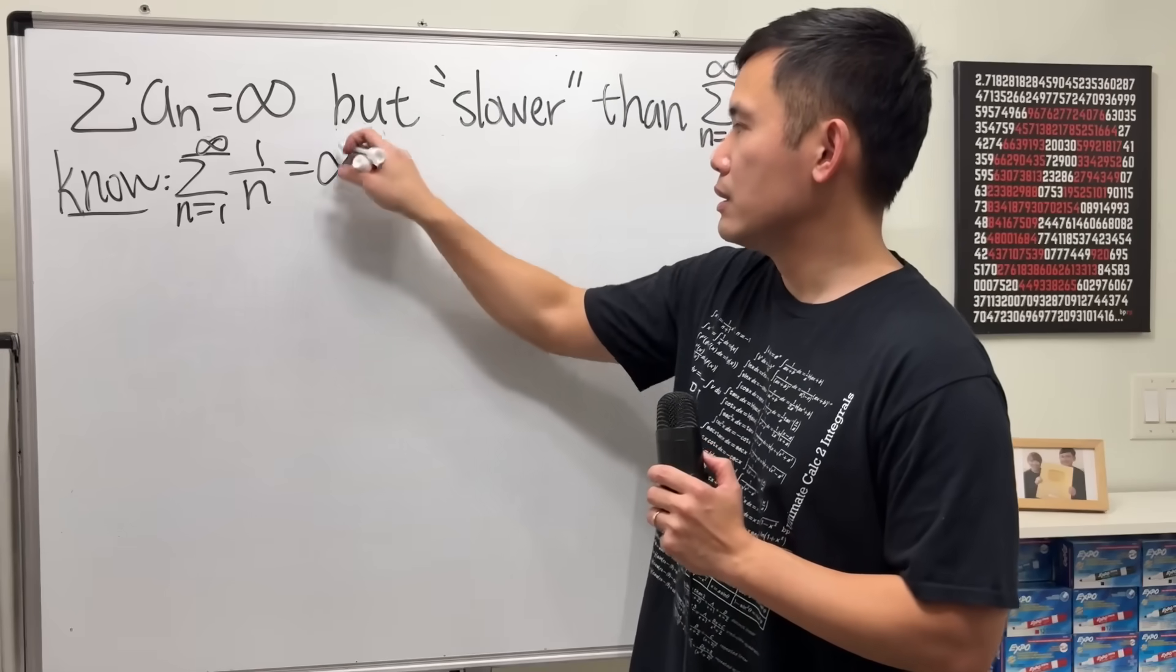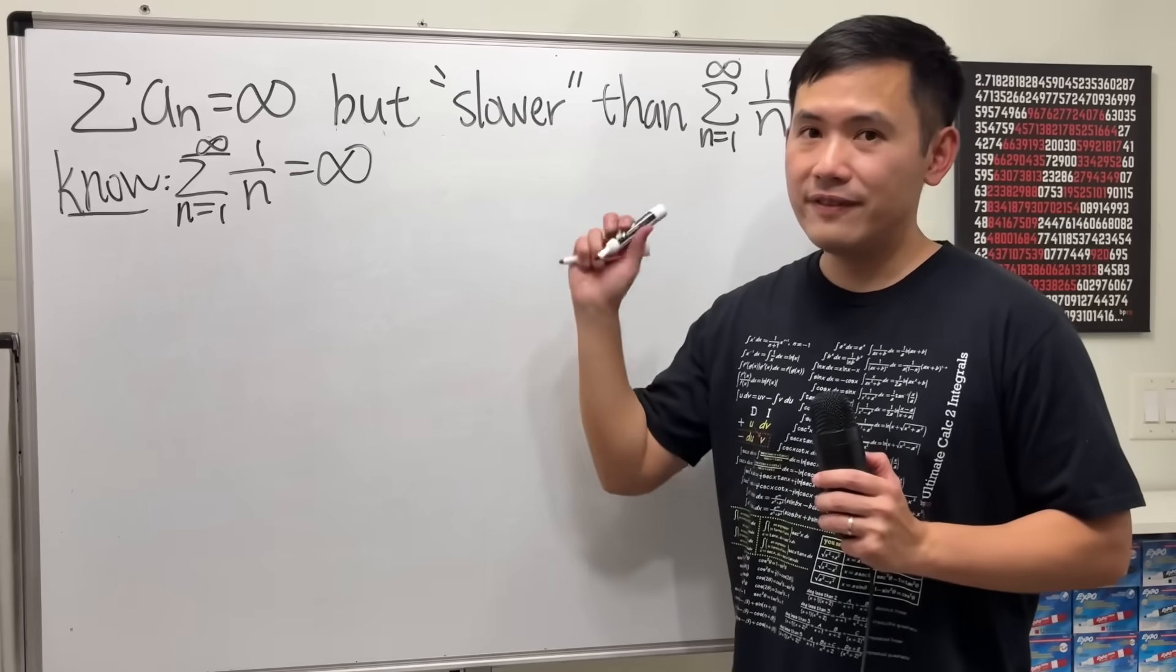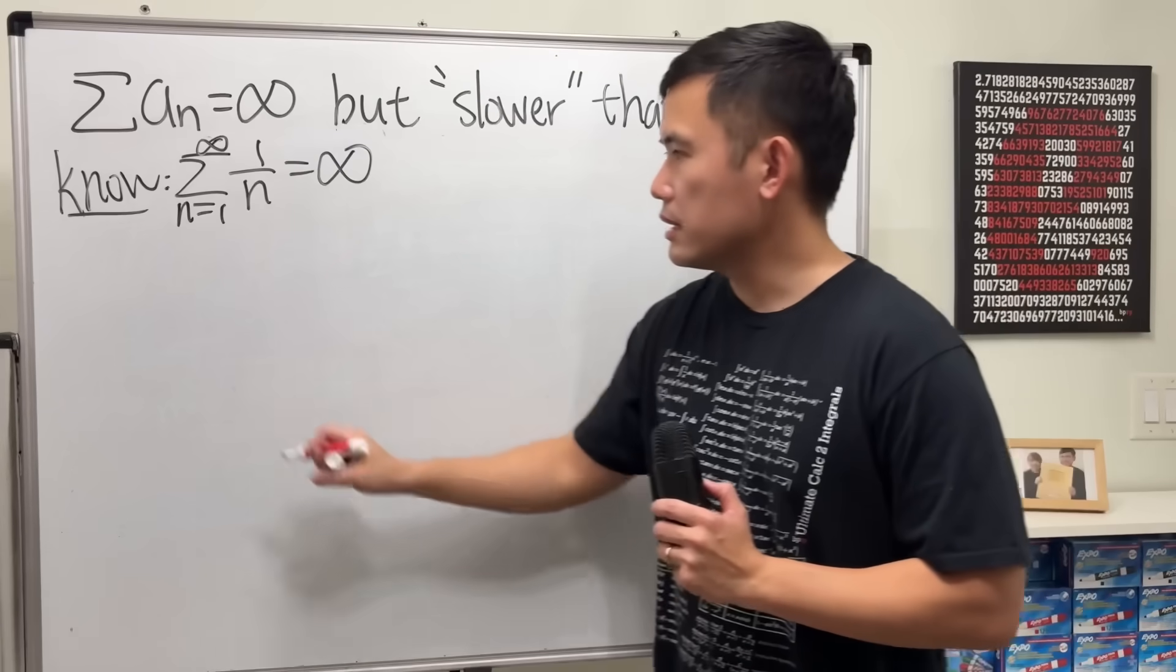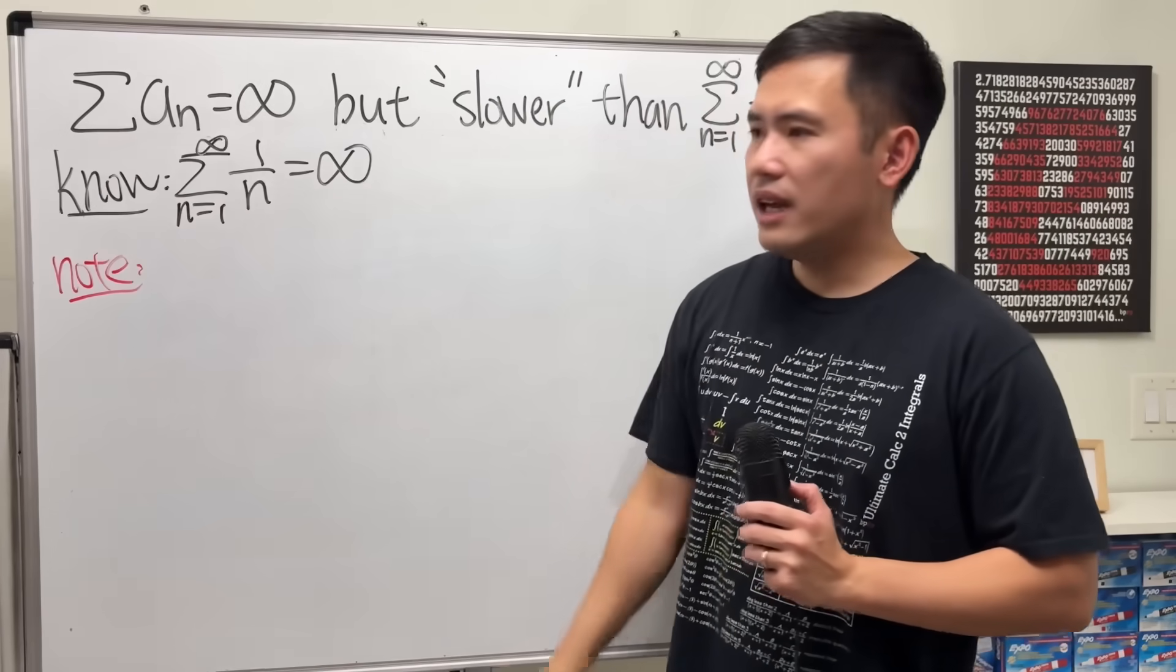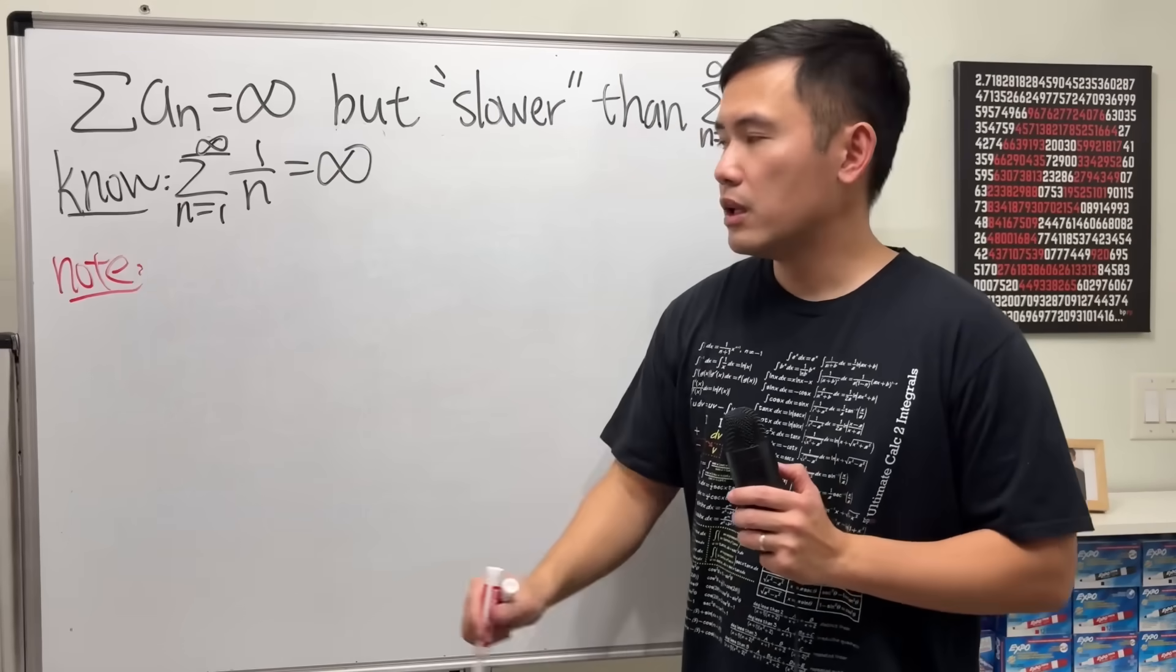And the result is infinity. It's very surprising because note that 1 over n is actually pretty small. In particular...